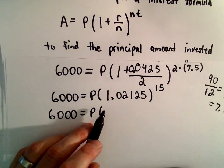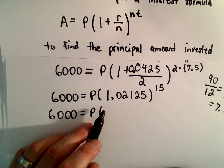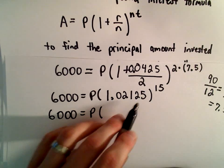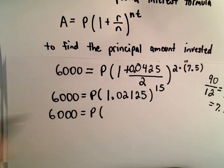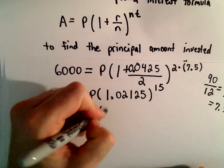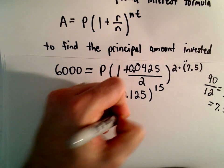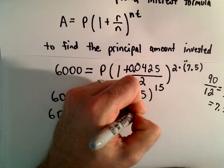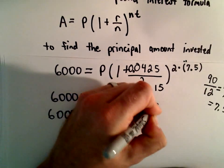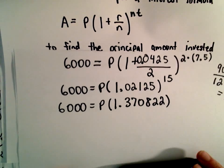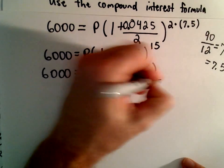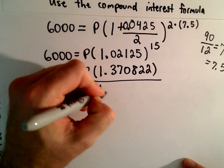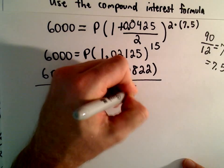So again, I'm going to simplify. We've got 1.02125, and I'm going to raise that to the 15th power. Using a calculator, I'm getting 1.370822 after rounding. So to solve for P — the principal or starting amount — I'm just going to divide both sides by 1.370822.